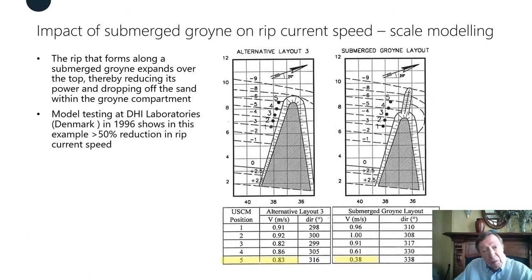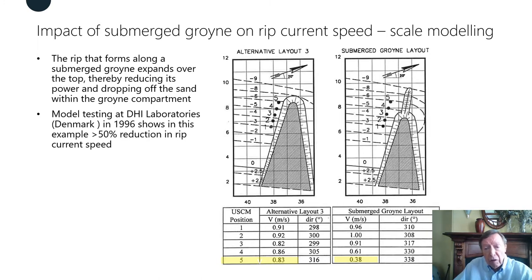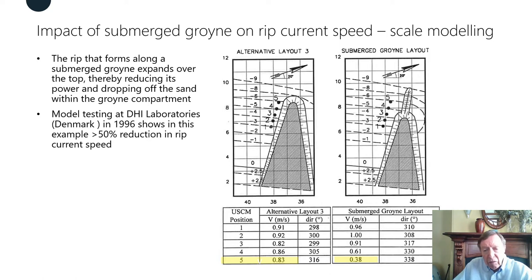Some hydraulic modelling done at the Danish Hydraulics Institute shows that if we extend a groin offshore as a submerged groin, then the rip current velocity that moves along the side of the groin expands beyond the tip of the emerged section and the velocities reduce quite markedly. As shown in these model results, the velocities have reduced from prototype values of 0.8 metres per second to around 0.3 metres per second.